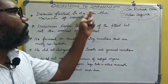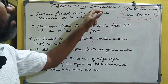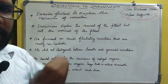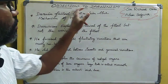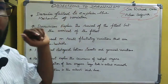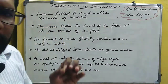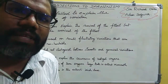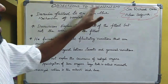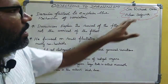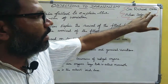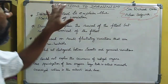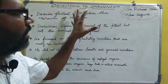Today the topic is objection to Darwinism. Darwinism is otherwise called the theory of natural selection. Objection means disagree. Two scientists object to the Darwinian theory of natural selection: Sir Richard Owen and Adam Sedgwick.